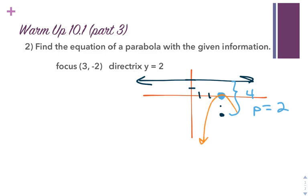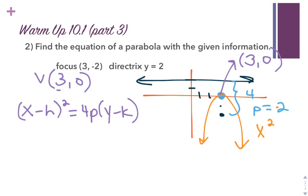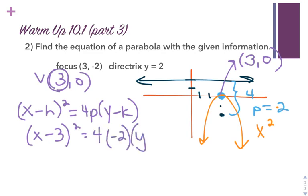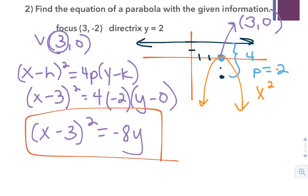I know that this opens down, so it's an x-squared, and the p has to be negative. From here, I can get that my vertex is (3, 0). So if it's an x-squared, I get x minus h squared equals 4p times y minus k. The h is 3, so I get x minus 3 squared equals 4 times negative 2 times y, giving x minus 3 squared equals negative 8y. And there's the equation for my parabola.